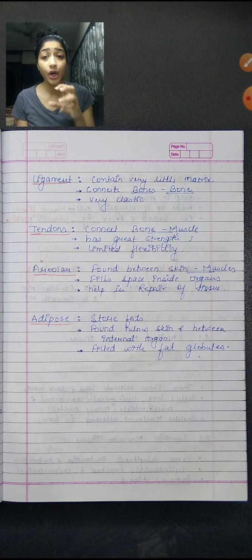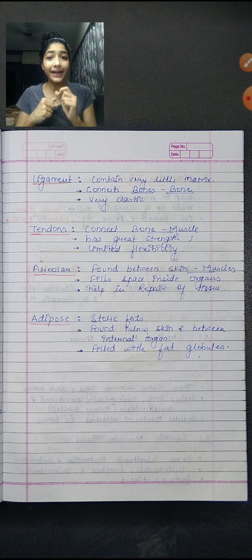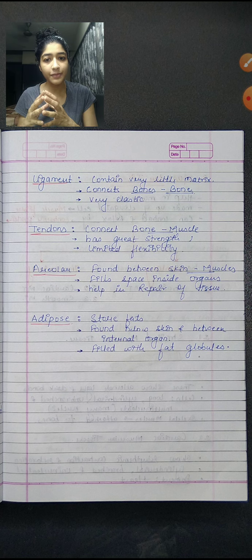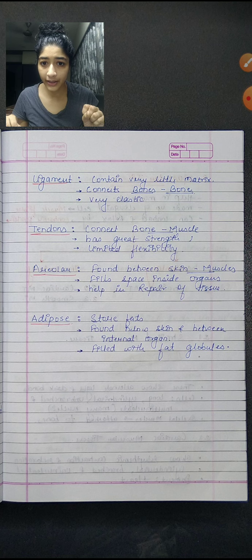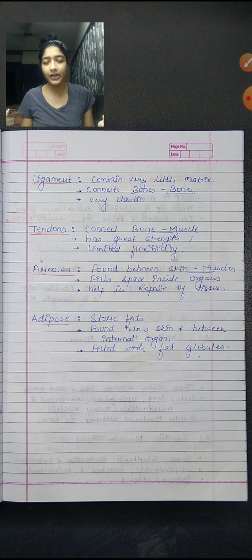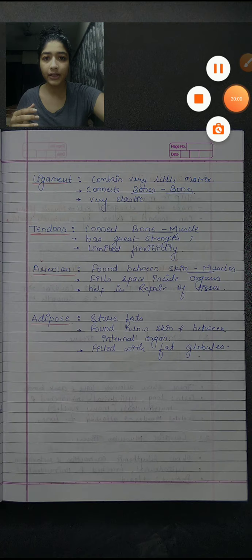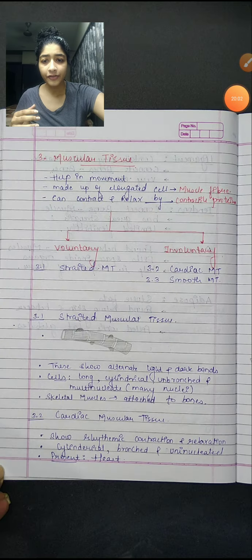Adipose tissue — the most important function of adipose tissue is to store fat. It is found below the skin and between internal organs. People who are a little chubby — that is because of fat tissue stored beneath the skin. Adipose tissue is filled with fat globules.